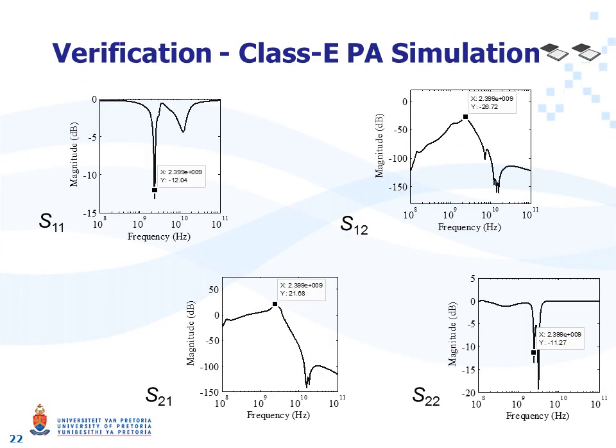This slide shows the S-parameters of the class E output stage. The most important parameter is S21, which shows good amplification at 2.4 GHz and is supposed to have positive gain. The parameter S22 shows that output impedance matching is present at 2.4 GHz — in other words, the design algorithms have successfully matched the output impedance. S11 shows input impedance matching; it should be noted that no input impedance matching algorithm was proposed in this thesis, but a cut-and-try method based on simulation was proposed as an alternative. S12 is the least important parameter, showing gain in the reverse direction, which is negative as expected.